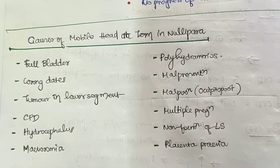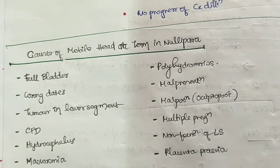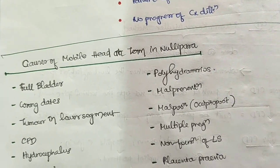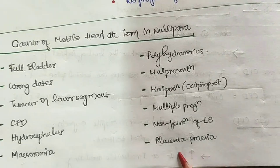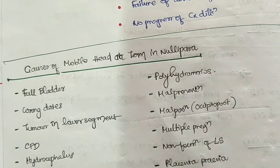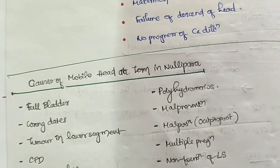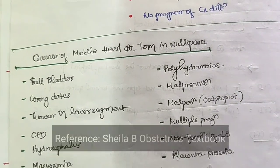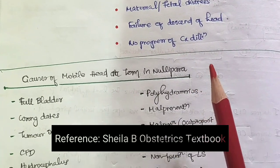Additional causes include non-formation of the lower uterine segment towards the end of gestation, and placenta previa — where the placenta is located in the lower segment near the cervical opening, preventing the head from engaging and keeping it mobile.